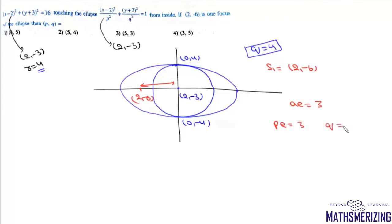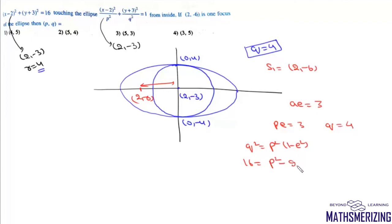With q = 4, using q² = p²(1 - e²): 16 = p² - (pe)² = p² - 9, so p² = 25 and p = 5. Therefore the answer is p = 5, q = 4 — option 2.